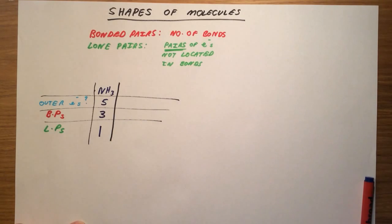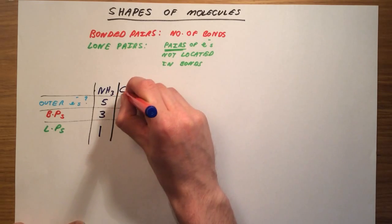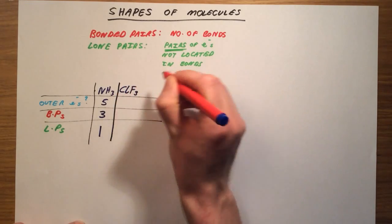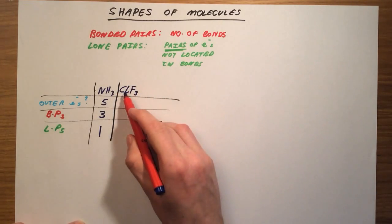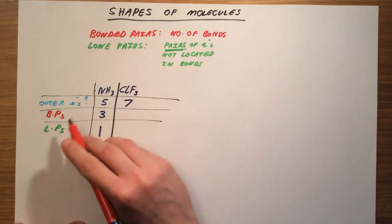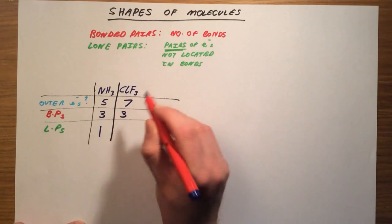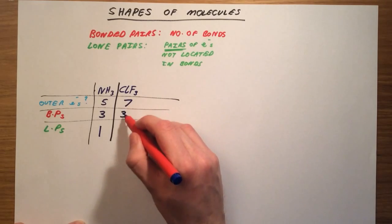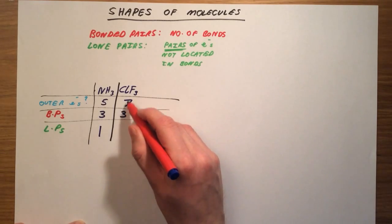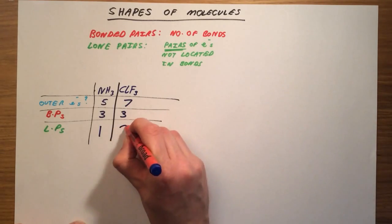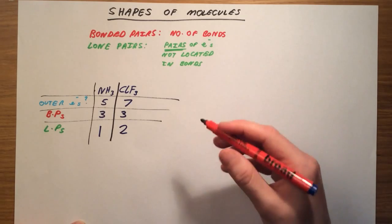For a trickier example, let's look at ClF3. Chlorine is in group 7, so it has 7 outer electrons. It has 3 bonds, so 3 bonded pairs of electrons. That leaves 4 electrons which are not located in bonds, giving us 2 lone pairs of electrons.